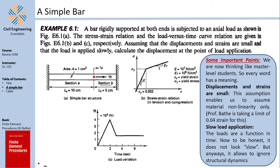Obviously, if you apply a load at that point, section B is going to shrink (get shorter) and section A is going to extend (get longer). Also, section B is going to be under compression, and section A is going to be under tension. The material relationship is going to be a bilinear one — the elastic part up to a certain yielding point, and then the plastic part all the way until the absolute maximum strain, which could be a failure point.